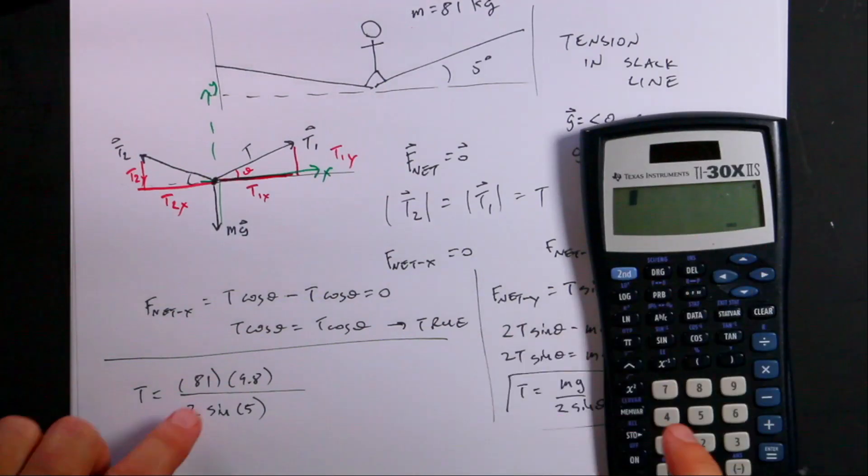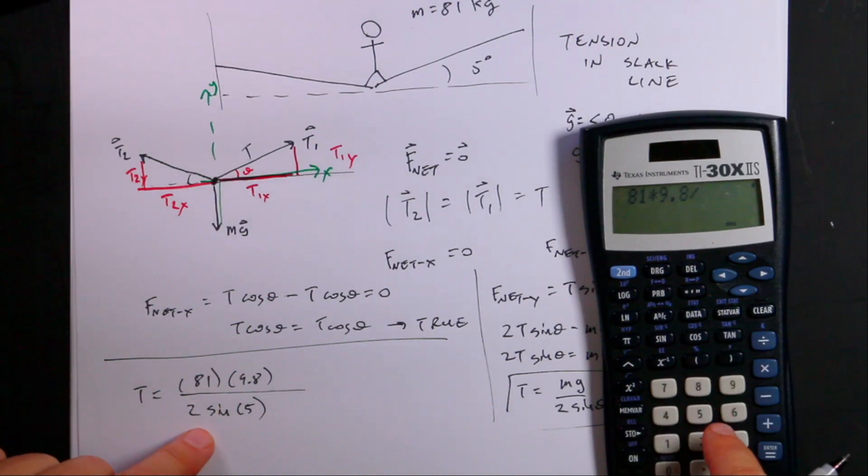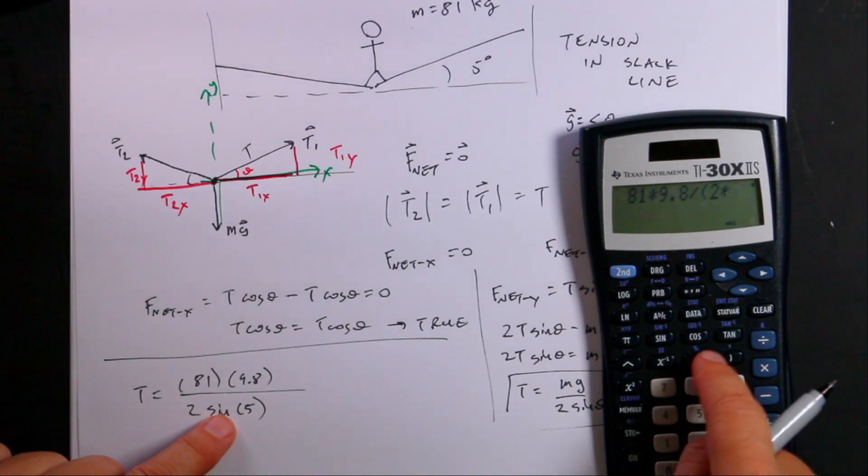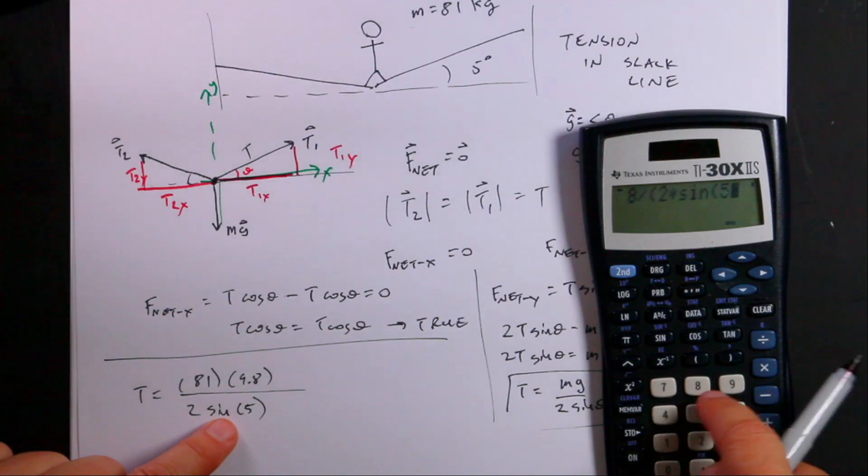So I'm going to use my handy dandy calculator. So I'm going to just enter this in. 81 times 9.8 divided by parentheses 2, because I want to divide by 2 and this, times sine. And you'll notice my calculator is in degrees mode. Sine of 5.